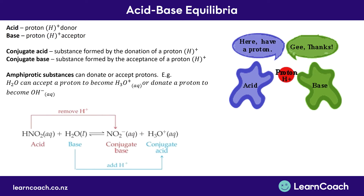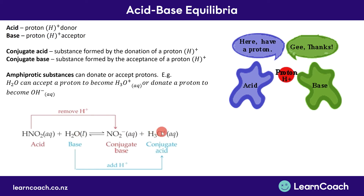Equally, every base must have a conjugate acid. All you do is add the H⁺ and you have the conjugate acid. So we have water here as a base. It accepts a proton, forming a conjugate acid, H₃O⁺. These four terms are found everywhere in acid-base chemistry.